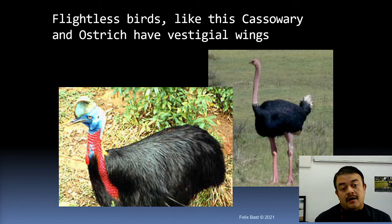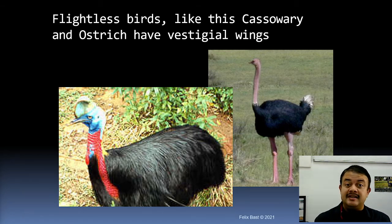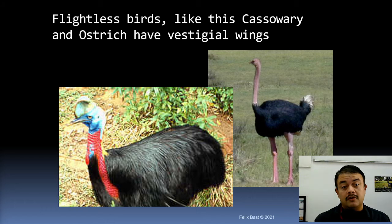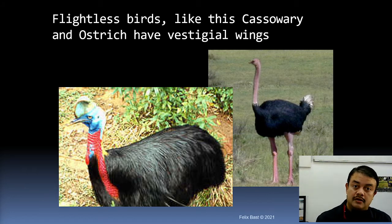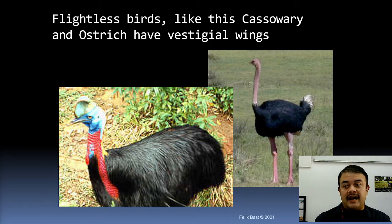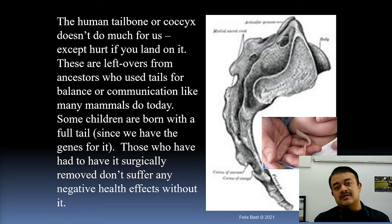We still have many flightless birds — cassowary, ostrich, emu, kiwi — that have wings with no flight function, making them vestigial organs. However, ostrich wings are also an example of exaptation — a change in the function of a trait. The original function of wings was warmth; in ostriches, warmth is still the primary function, with sexual display as a secondary function, and locomotion or flight as a tertiary adaptation.